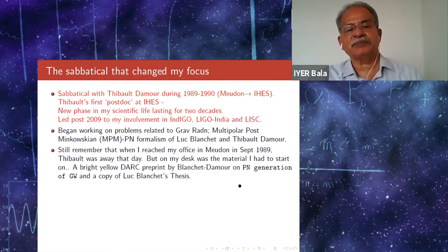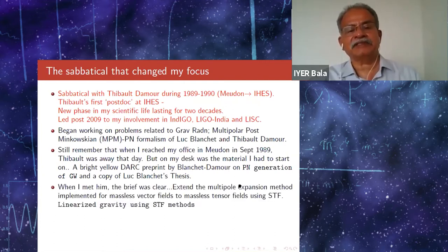I still remember that when I reached my office in Meudon in September 1989, Thibaut was away on that day, but on my desk was the material I had to start on: a bright yellow dark preprint by Blanchet Damour on the PN generation of gravitational waves and a copy of Luc Blanchet's thesis. When I met him the next week, the brief was clear. Extend the multipole expansion method implemented for massless vector fields to massless tensor fields using symmetric trace-free tensors.